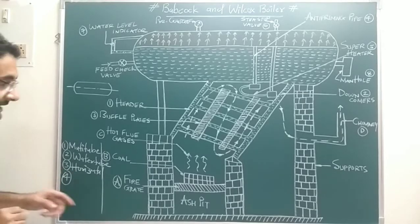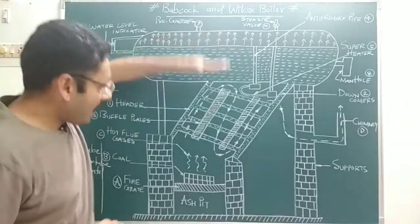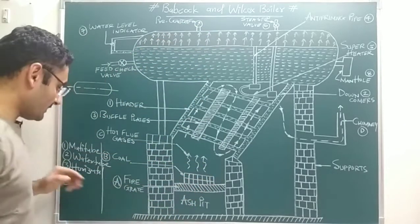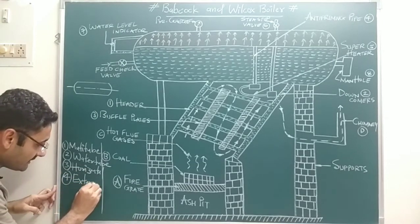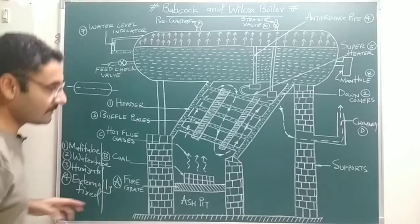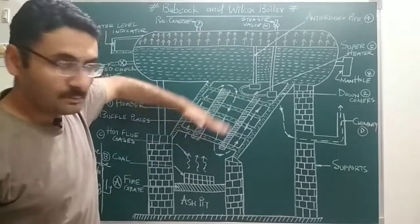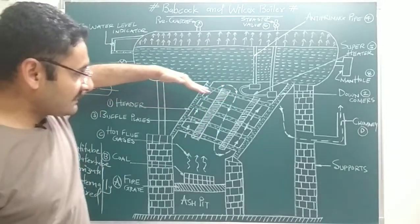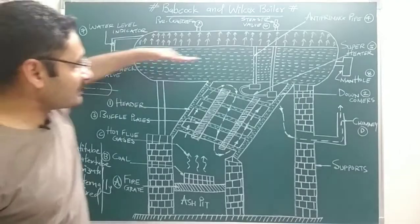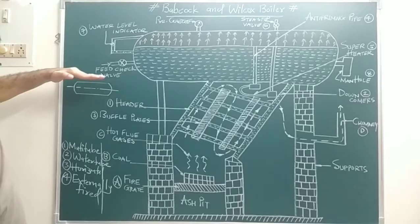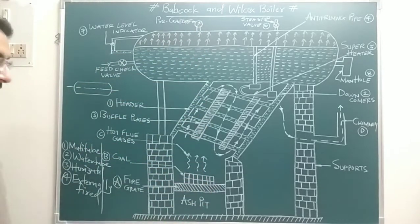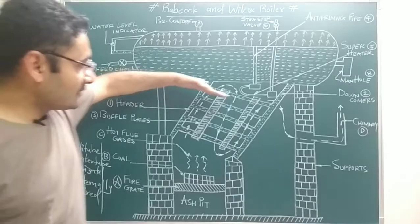The fourth point: combustion of the fuel takes place outside the shell of the boiler, so this boiler is also known as an externally fired boiler. To summarize: multi-tube boiler, water tube boiler, horizontal axis boiler, and externally fired boiler. Additionally, the tubes are inclined at up to 15 degrees so we can take advantage of natural circulation of water.